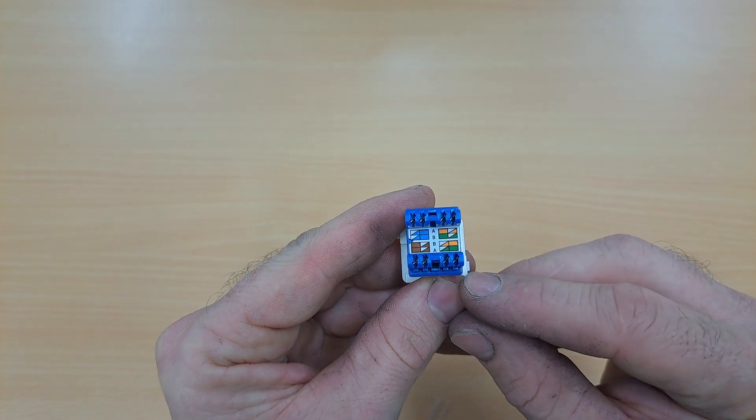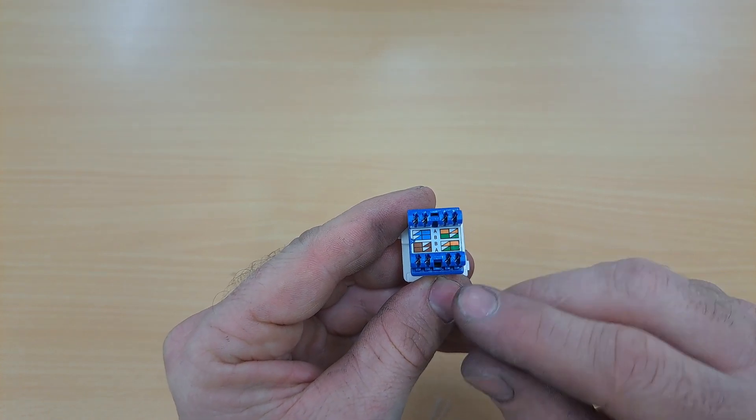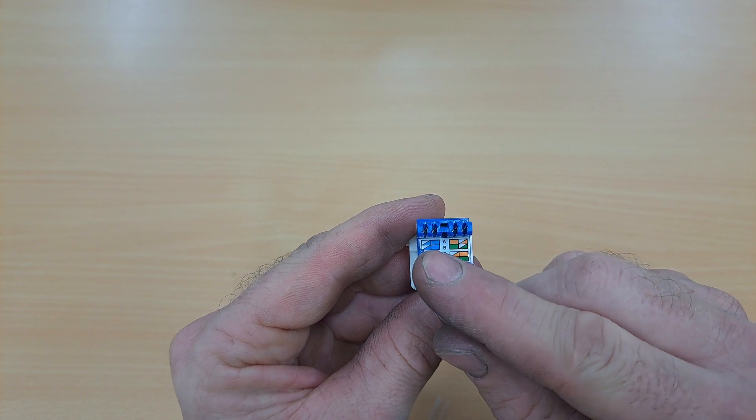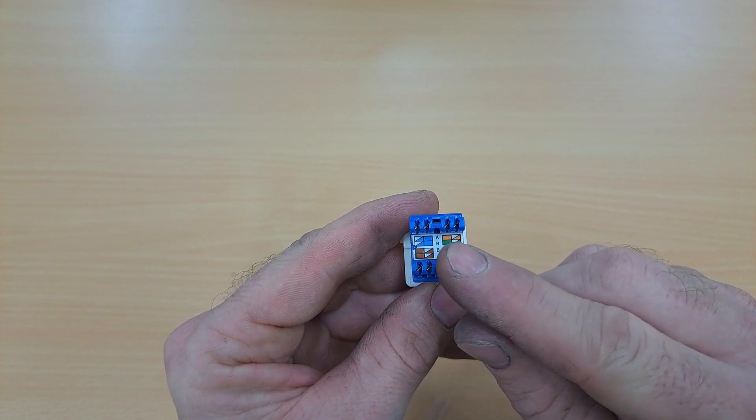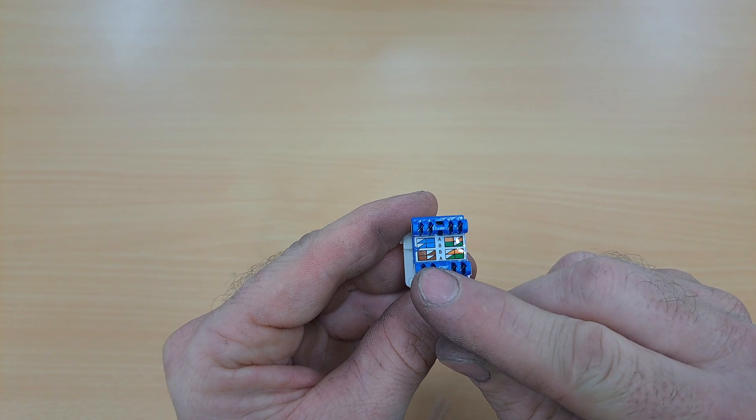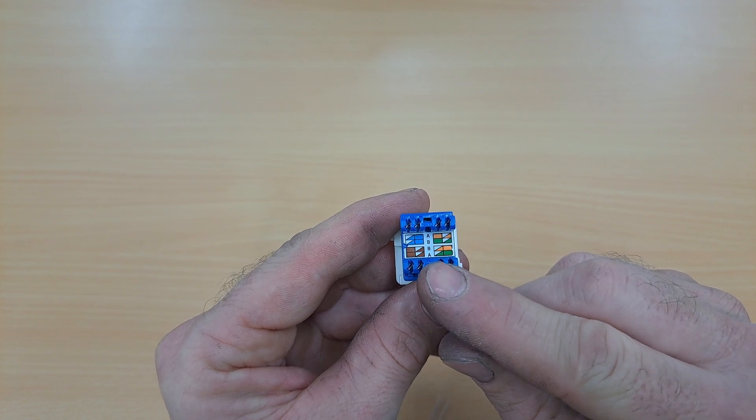So we need to ensure A is at both ends. So we've got blue white, blue, orange, orange white, brown, brown white, green white, green.